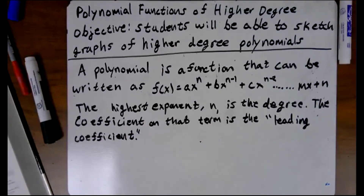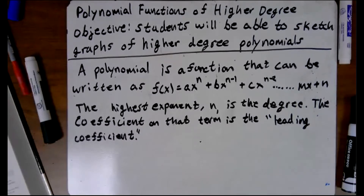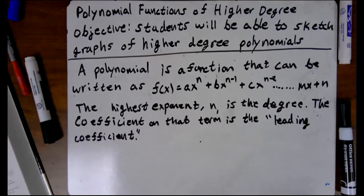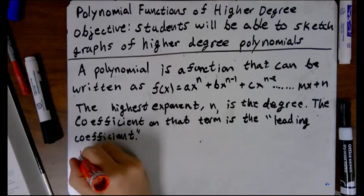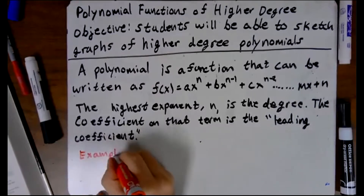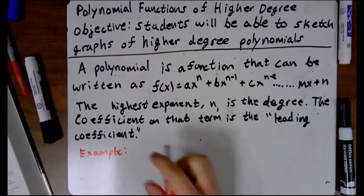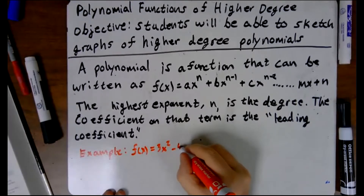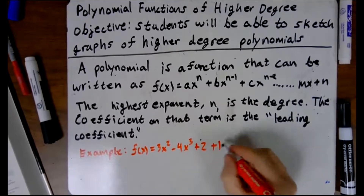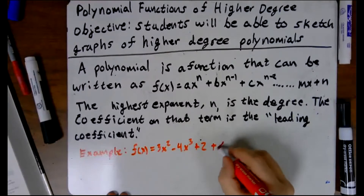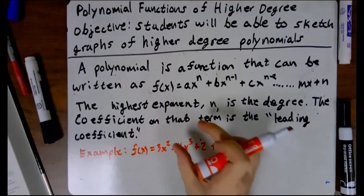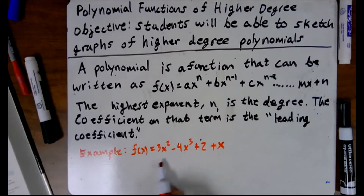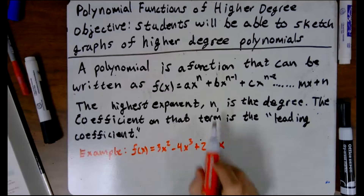We learned in a previous lesson that the leading coefficient and the degree determine the overall shape of the function. Let's look at an example: f of x equals 3x squared minus 4x cubed plus 2 plus x. This is a polynomial. It's not written in polynomial form right now, but I could rewrite it as negative 4x cubed plus 3x squared plus x plus 2, and that would be in polynomial form.